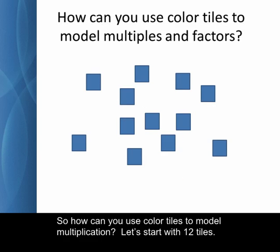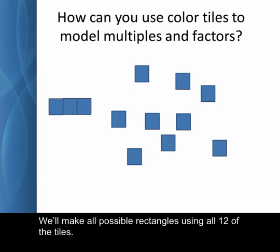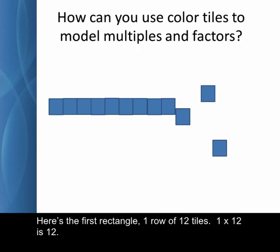So, how can you use color tiles to model multiplication? Let's start with 12 tiles. We'll make all possible rectangles using all 12 of the tiles. Here's the first rectangle, one row of 12 tiles. 1 times 12 is 12.